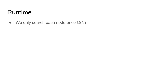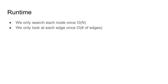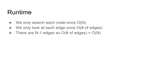Let's look at the runtime of this algorithm. We only search each node once, which gives O(n). We also only look at each edge once. In this problem we have a tree, which means there are n−1 edges, so O(edges) = O(n). Our overall runtime is O(n), which works because n is 100,000.